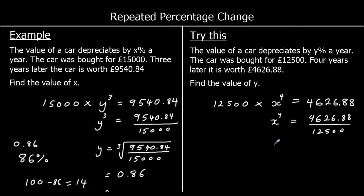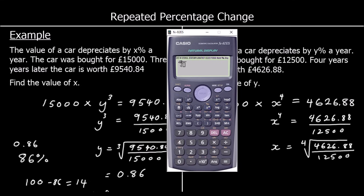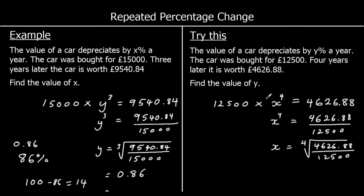We've got X to the power of 4, so we need to do the fourth root of our number. We type this into the calculator using the fourth root. It's £4,626.88 over £12,500. And I've got 0.77999999, so we can call that 0.78 to two decimal places. So the multiplier is 0.78.